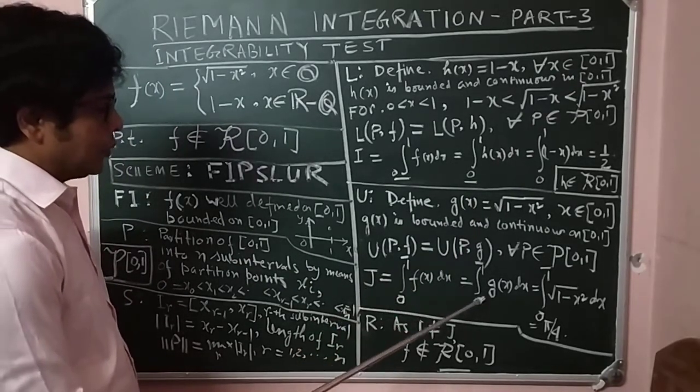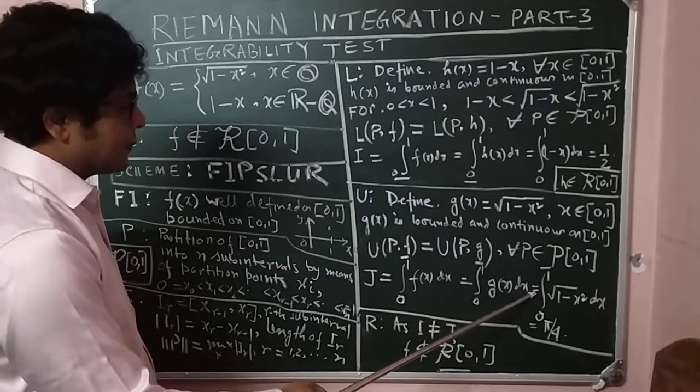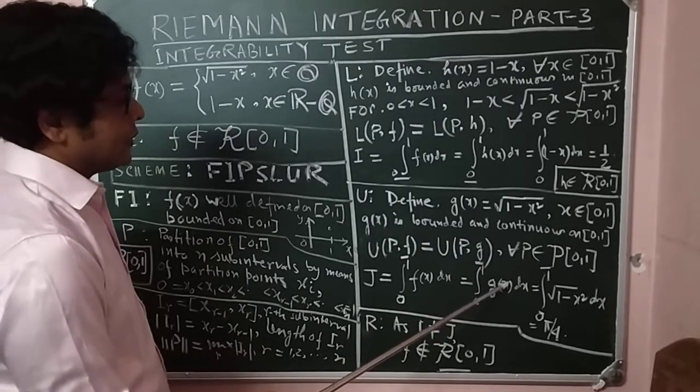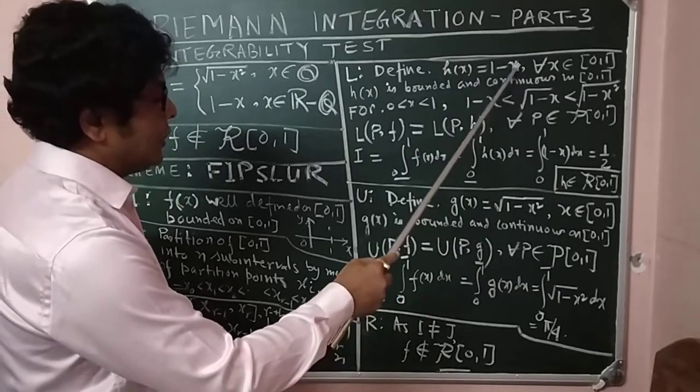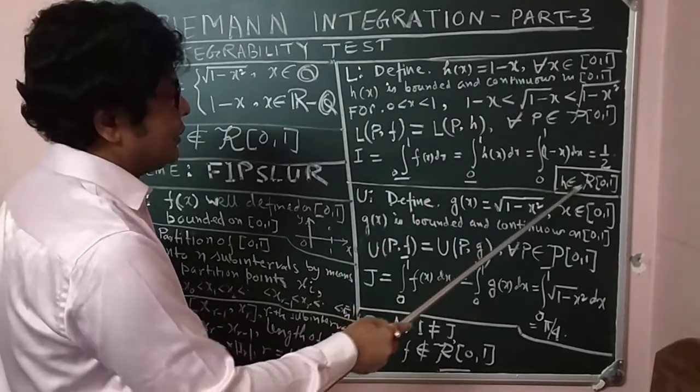Then U(P,f) will be converted to U(g,x) as this gives the maximum value of the function in any sub-interval between 0 and 1. We have defined the upper integral: ∫₀¹ f(x)dx (upper bar) = ∫₀¹ g(x)dx.